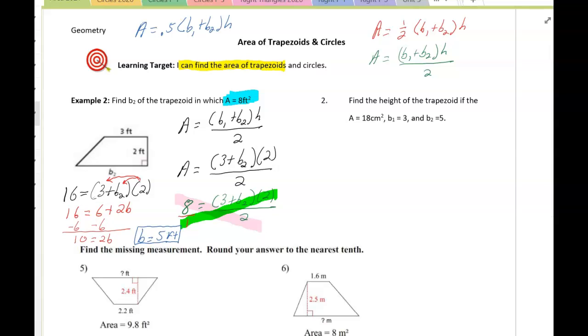In problem number 2, we want to do the same thing, but we are not given a picture. So it says find the height of the trapezoid if the area is 18 centimeters squared, base 1 is 3, base 2 is 5. So I always like to write down the formula. A equals b1 plus b2 times the height over 2. I'm going to plug in the numbers. 18 equals 3 plus 5 times the height, divide by 2.